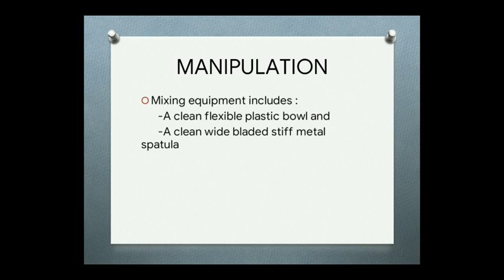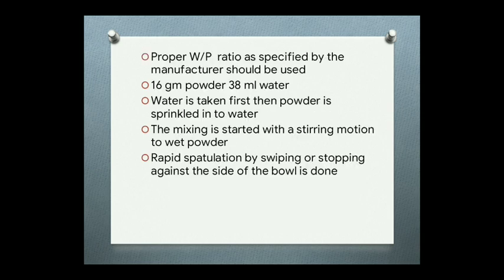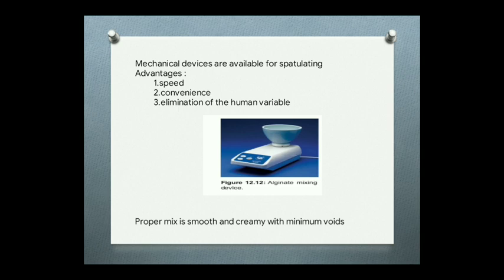Regarding manipulation — how to mix the alginate: the equipment includes a clean flexible plastic bowl and a clean wide-bladed stiff metal spatula. The proper water-to-powder ratio as specified by the manufacturer should be used. Generally, the ideal measurement is 16 grams of powder mixed in 38 ml of water. Water is taken first, then the powder is sprinkled into the water. Mixing begins with a stirring motion to wet the powder, followed by rapid spatulation by swiping against the side of the bowl. Mechanical spatulation devices are also available, offering speed, convenience, and elimination of human variables. The proper mix should be smooth and creamy with minimal air bubbles.